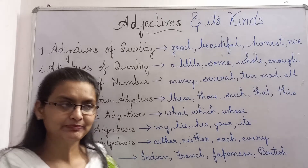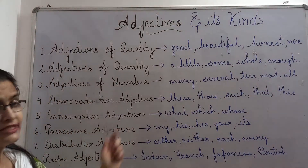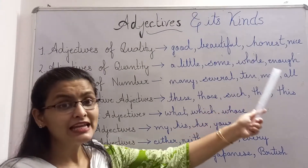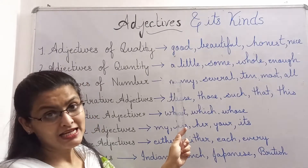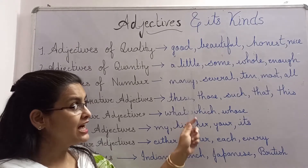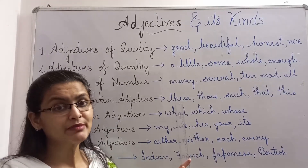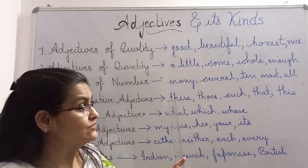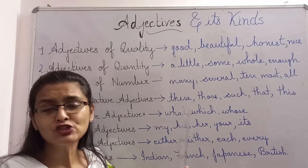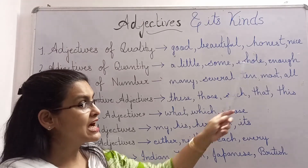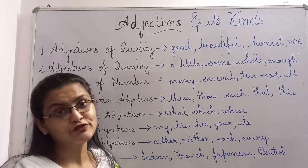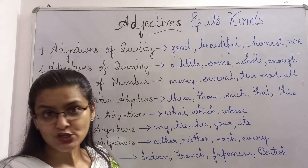Let us see the second kind: adjectives of quantity. Examples: a little, some, whole, enough. I had a little rice — speaking about the quantity of rice I had. I had some food — it also speaks about the quantity of food. I ate the whole cake — mentioning how much of the cake I had. I had enough rice — mentioning the quantity of rice I had.